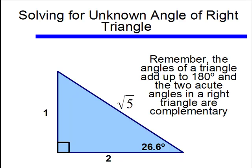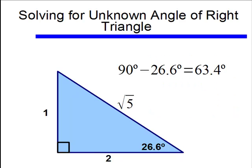Finding that missing angle is easy, if you remember that the angles of any triangle have to add up to 180 degrees, and since we have one angle of 90 degrees, then we know that the two acute angles in this right triangle are complementary, that is, they add up to 90 degrees. So if I take 90 degrees and subtract 26.6 degrees from it, I get that last angle being 63.4 degrees, and that's how we solve a right triangle.